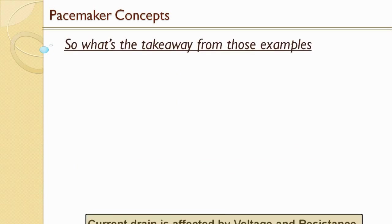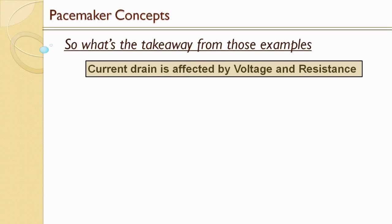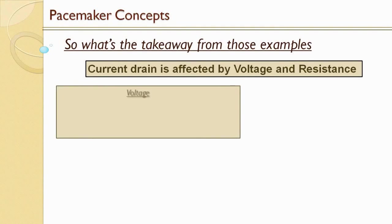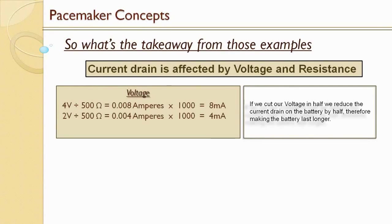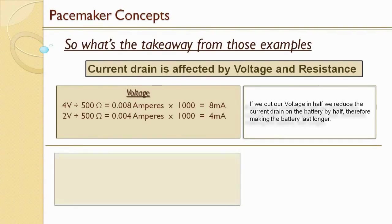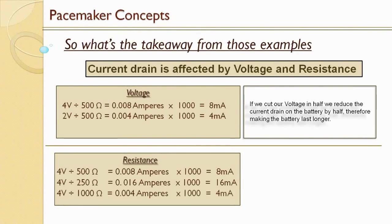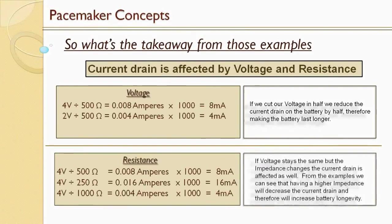So what's our takeaway from those examples? Current drain is affected by both voltage and resistance. If we cut our voltage in half, we reduce the current drain on the battery by half, therefore making the battery last longer. We can see the same thing for resistance: if our voltage stays the same but the impedance changes, the current drain is affected as well. Having a higher impedance will decrease the current drain and therefore increase battery longevity.